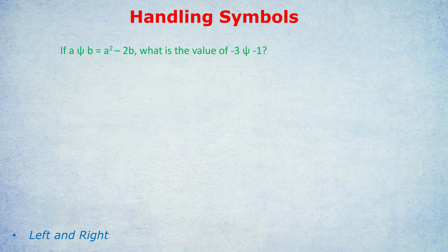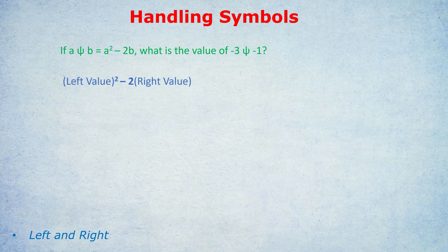The instructions are: for the left value a, square it, and for the right value b, do negative two times b. So a symbol b equals a² minus 2b. In other words, square the value on the left, then take away two times the value on the right. Now we follow these instructions carefully with the new values they've asked about.